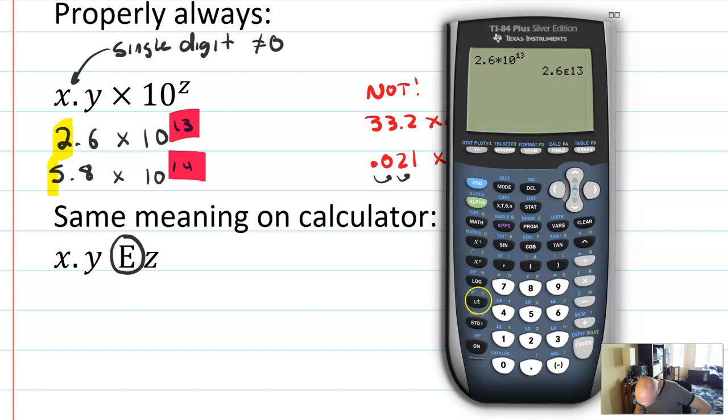And your calculator has a big old button. Where is it? Let me get my cursor out. It says E-E. There's E-E right there above the comma. So, if I want to do 2.6 times 10 to the 13th, all I really have to do is that.